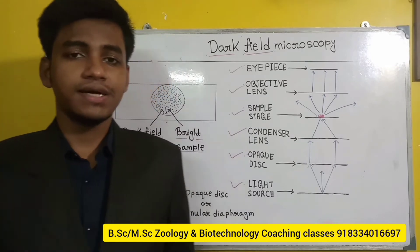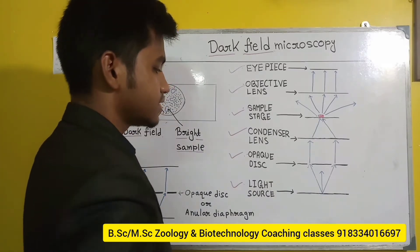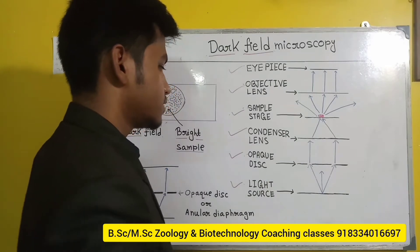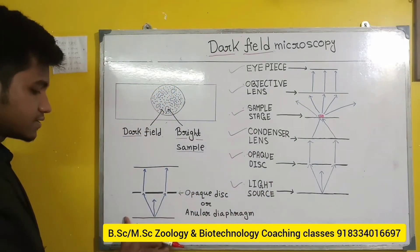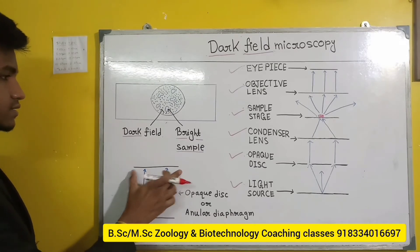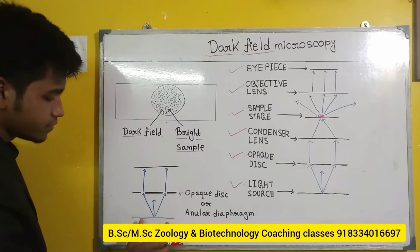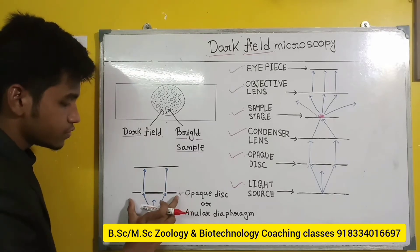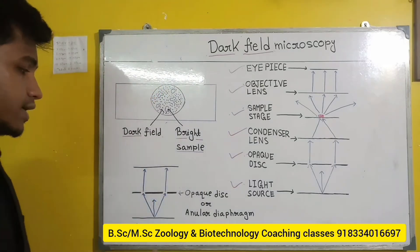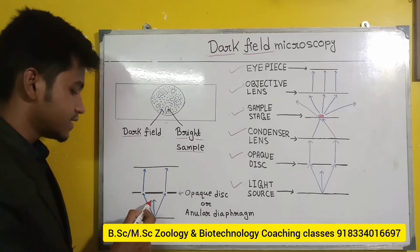Now we will talk about the principle through which the dark field microscope works. The light rays are coming from the light source. In the first step, light rays come from the light source. Then the opaque disc, called annular diaphragm, comes next. The primary work of the opaque disc or annular diaphragm is that it will prevent the light rays from entering the center part of the condenser lens.